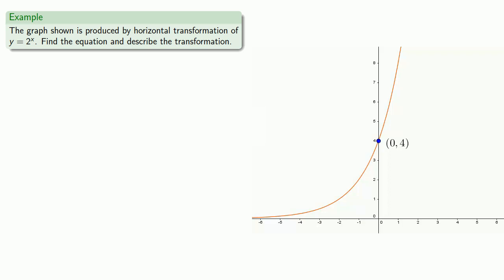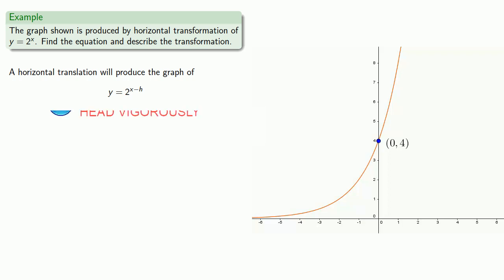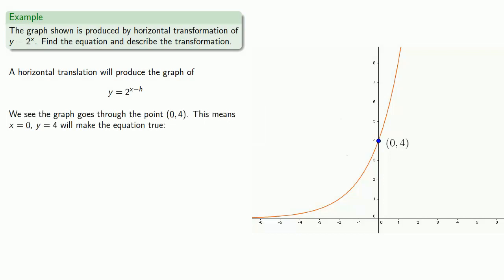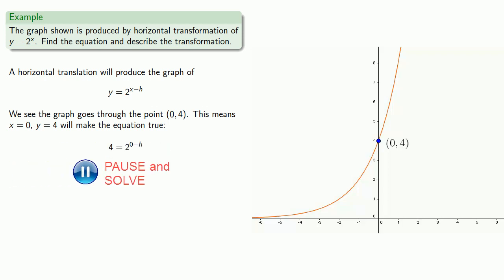We can also go backwards. Let's say the graph shown is produced by a horizontal transformation of y equals 2 to the x. Let's find the equation and describe the transformation. A horizontal translation will produce the graph of y equals 2 to the power x minus h. We see the graph goes through the point (0, 4), meaning x equals 0 and y equals 4 makes the equation true. We can solve for h, giving us h equals negative 2.